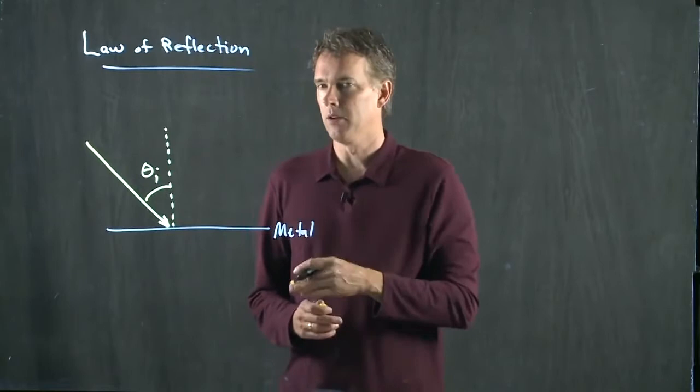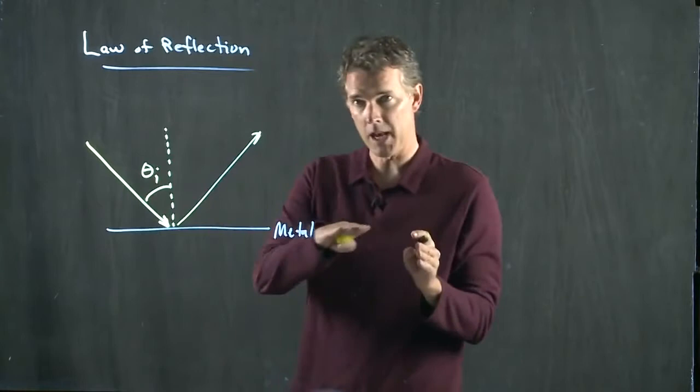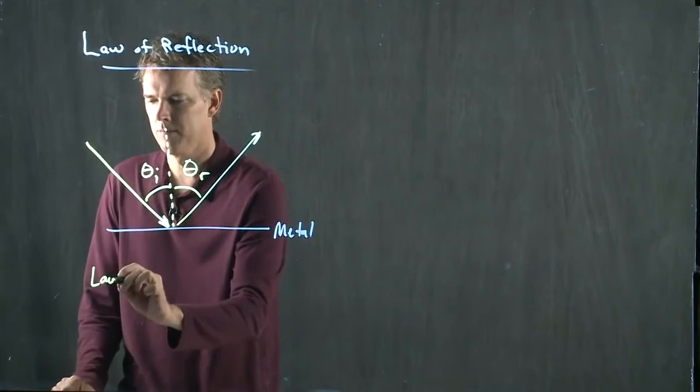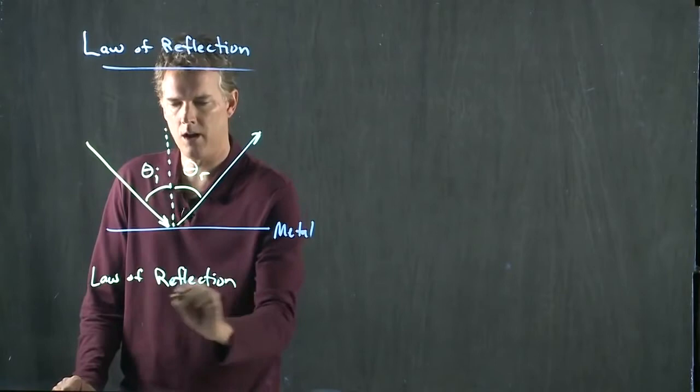Going out the other side, we of course have a reflection. If this is a nice flat metal surface, then that reflection is at theta R. The law of reflection says the following: theta I equals theta R. Incident equals reflected. Remember, they're always relative to that surface normal.